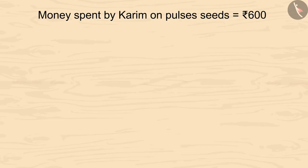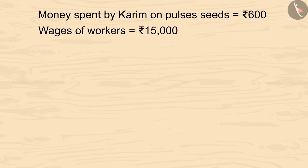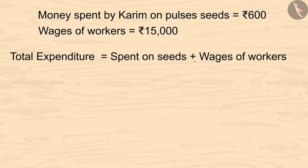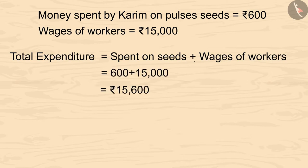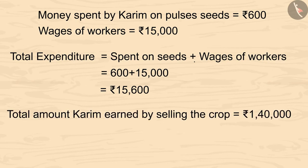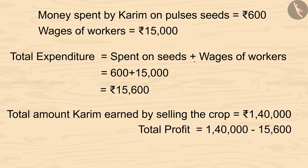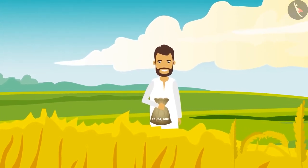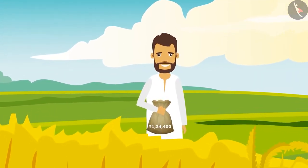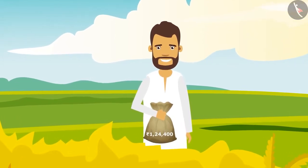He bought pulse seeds for 600 rupees and gave 15,000 rupees to the workers. Adding both amounts gives a total expenditure of 15,600 rupees. Karim got 1 lakh 40,000 rupees on selling the crop. Subtracting 15,600 from 1 lakh 40,000, we are left with 1 lakh 24,400 rupees. So kids, Karim has clearly made a profit of 1 lakh 24,400 rupees!